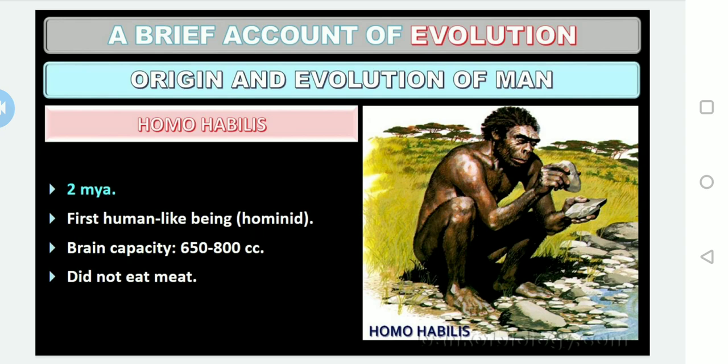Homo habilis was called the handyman because tools were found with his fossil remnants. His brain capacity was 650 cc to 800 cc — cc meaning cubic centimeters. He was the maker of crudely chipped stone tools and probably did not eat meat.